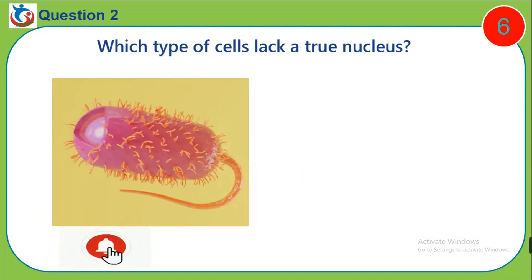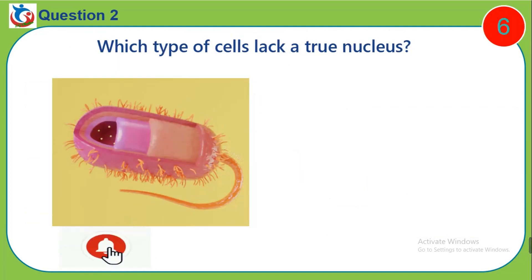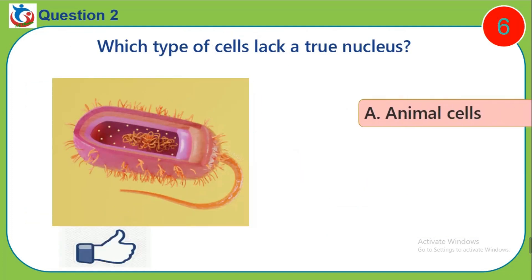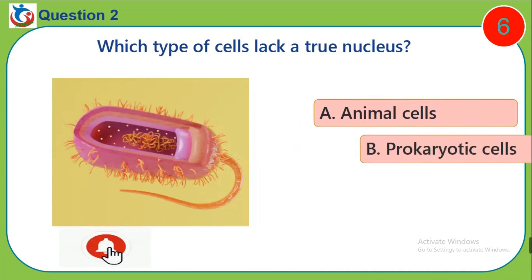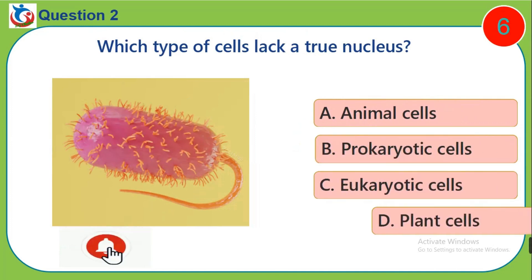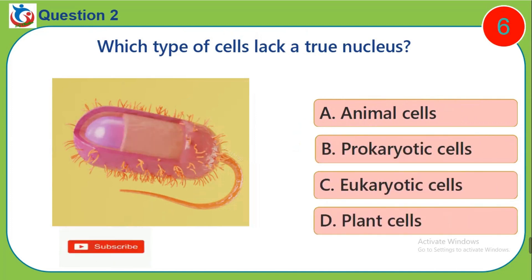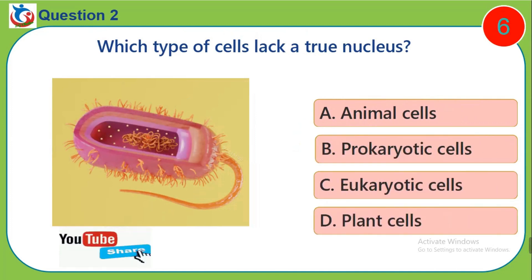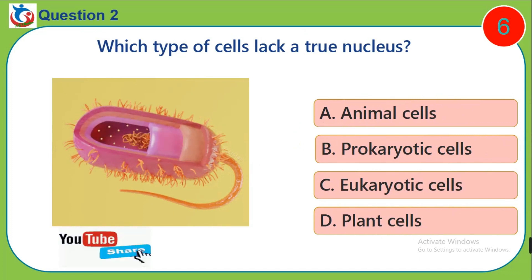Question 2. Which type of cells lack a true nucleus? A. Animal cells. B. Prokaryotic cells. C. Eukaryotic cells. D. Plant cells.